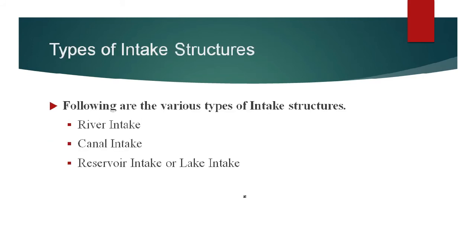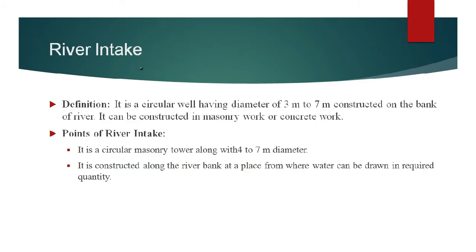There are three types of intake structures: river intake, canal intake, and reservoir intake or lake intake. A river intake is a circular well having a diameter of 3 meter to 7 meter, constructed on the bank of a river. It can be constructed in masonry work or concrete work. It is a circular masonry tower with 4 meter to 7 meter diameter, constructed along the river bank at a place from where water can be drawn in the required quantity.